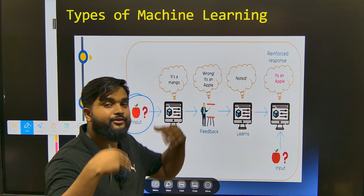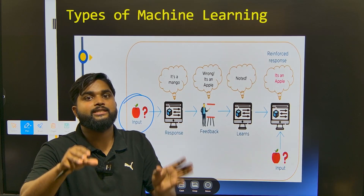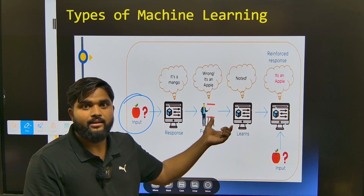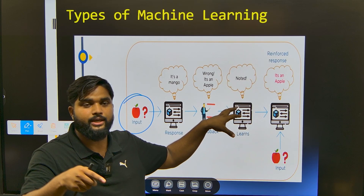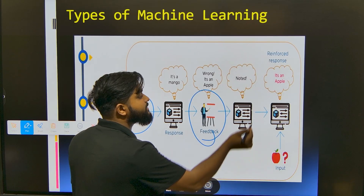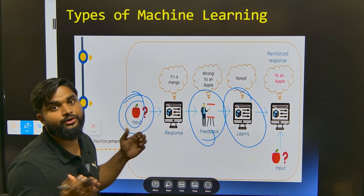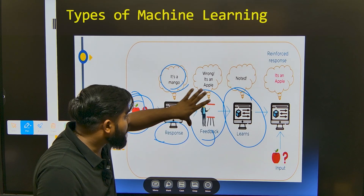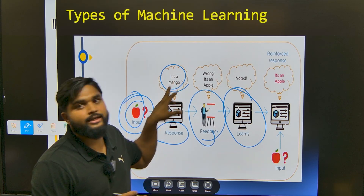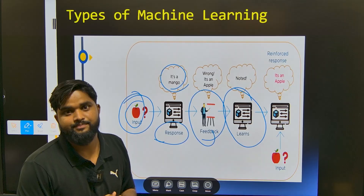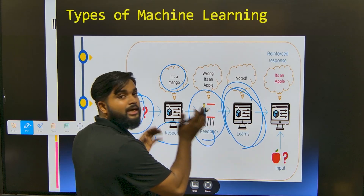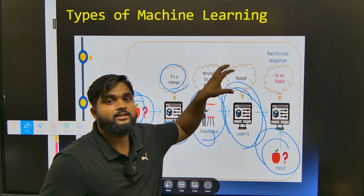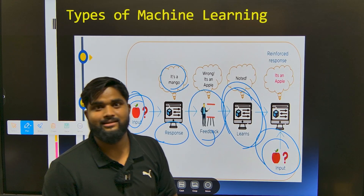In reinforcement learning, we pass raw data and train the model. If the model gives a response and the agent passes feedback, the machine learns from that feedback. For example, we pass raw data of an apple, but the machine responds with 'mango.' We give feedback: it's not a mango, it's an apple. Next time, the machine learns from this and when we pass similar data, it correctly predicts apple. This is reinforcement learning.